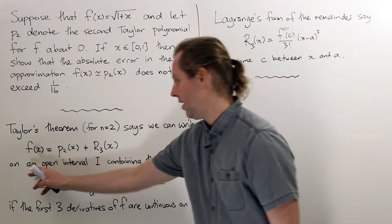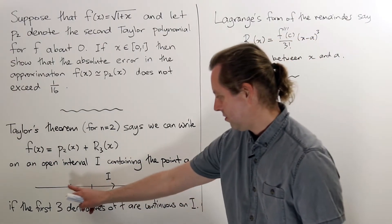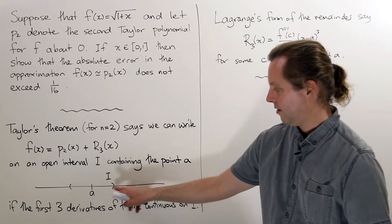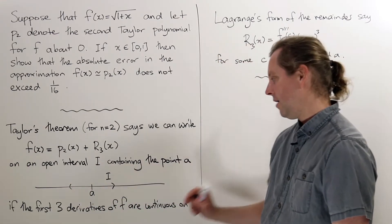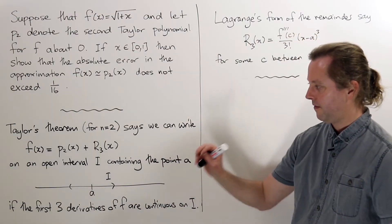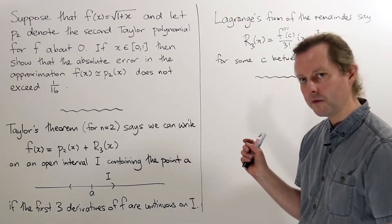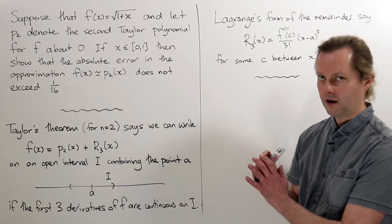So it says we can write it like this on an open interval I containing the point a, an open interval around it, if the first three derivatives of f are continuous on I. So this function f, you have to be able to differentiate it three times and all of those derivatives must themselves be continuous functions, and then we're good to go.